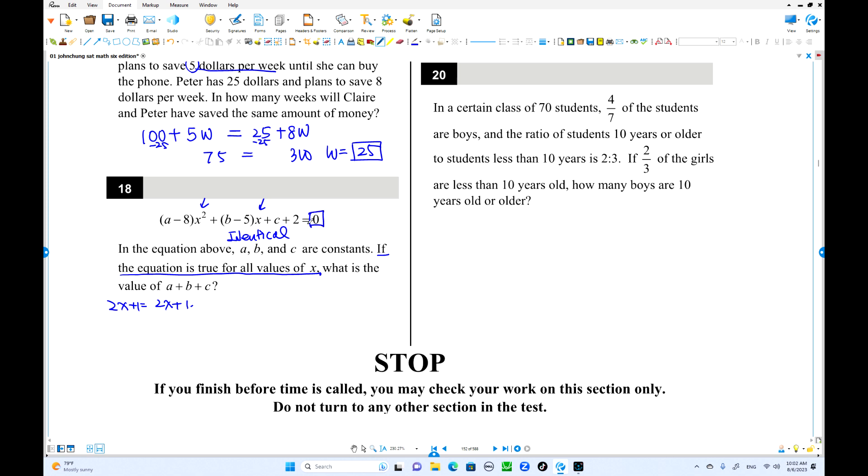But this is zero over here. Why is this zero? Zero times x squared, zero times x, and the constant is also zero. That's why we all got zero there. So to be identical, every coefficient or constant must be equal. This is coefficient of x squared, must be zero. So a equals 8. B equals what? Coefficient of x, zero, so 5. This constant should equal zero. C plus 2 equals zero. C must be negative 2. Sum of all these three numbers, 13 minus 2 is 11.